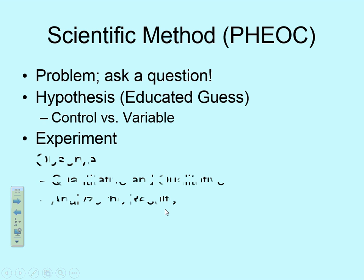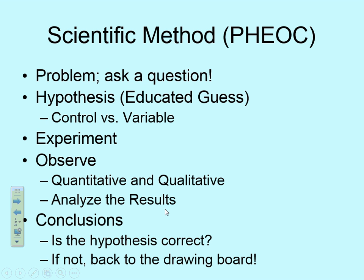The last thing we have to talk about when we discuss science is the scientific method — how do we go about exploring phenomena? The way I abbreviate it is PHEOC: P-H-E-O-C. We have a problem — that's the very first thing. We ask a question, and with that question we form a hypothesis. A hypothesis is an educated guess. Within that hypothesis, we're going to have controls and variables, and we will talk about those as we jump into the lab tomorrow.